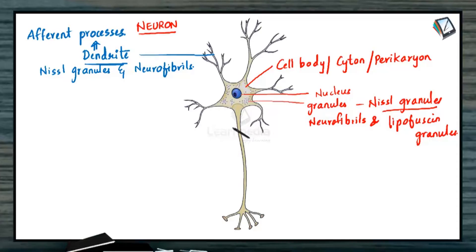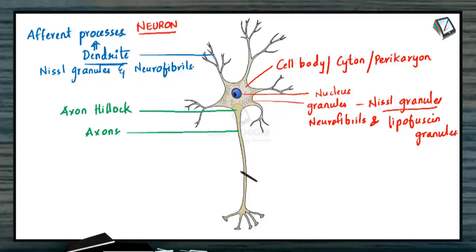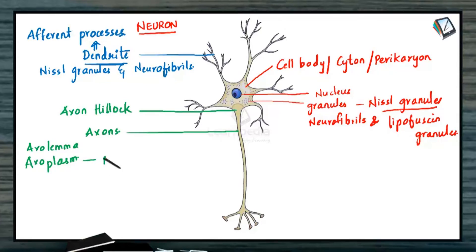The next part is the axon. A neuron would have a single axon. The axon is very thin in comparison to the dendrites, and is very long and cylindrical in shape. There is a single axon from the cell body, and the point at which the axon arises is called the axon hillock. These axons have a plasma membrane called the axolemma, and the cytoplasm inside is referred to as axoplasm. Within the axoplasm you would have only the neurofibrils — you would not find the Nissl granules. The axons may give rise to small lateral processes referred to as collateral axons.